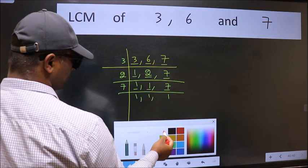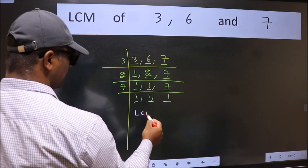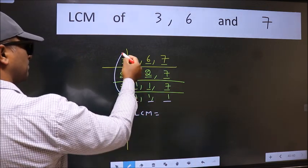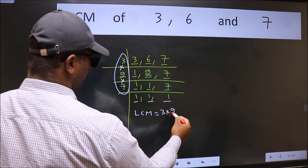So we got 1 in all 3 places. So our LCM is the product of these numbers. That is 3 times 2 times 7.